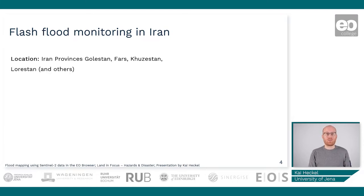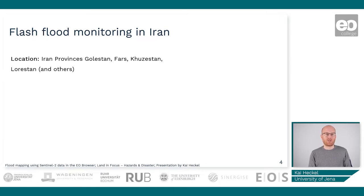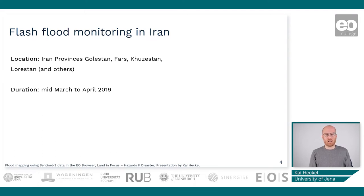The location of the flooding event was basically the entire country, except for a couple of provinces untouched by the heavy rainfalls. Especially the provinces Golestan, Fars, Khuzestan, and Lorestan, among others, were heavily affected by the rainfalls and the flooding that came shortly after. This is a flash flood event, meaning the duration is rather short — strong rainfalls over a short period of time — and all these heavy rainfalls occurred between mid-March and April 2019.